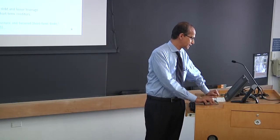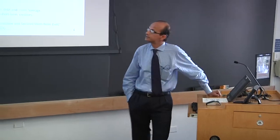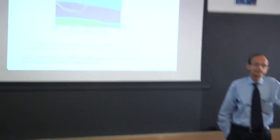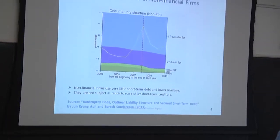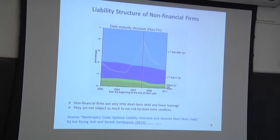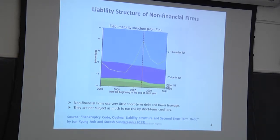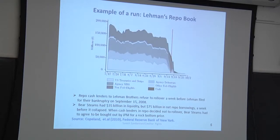For non-financial firms, the green shading is quite negligible. On average, non-financial firms have much less run risk — they use much less short-term debt and tend to use a lot more long-term debt.